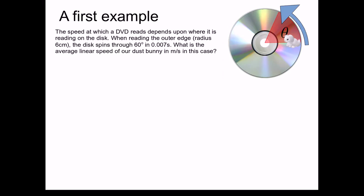Let's move on to a first example using these concepts. The speed at which a DVD reads depends upon where it's reading from the disk. When reading the outer edge where our dust bunny is located, which is a radius of 6 cm from the center, the disk spins through 60 degrees in 0.007 seconds. My question is, what is the average linear speed of our dust bunny in meters per second in this particular case?